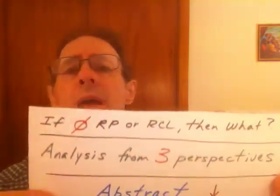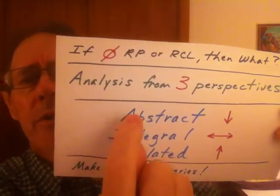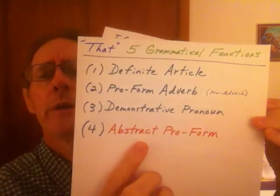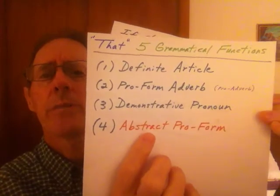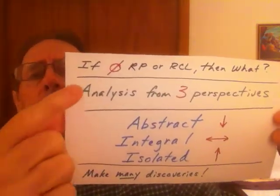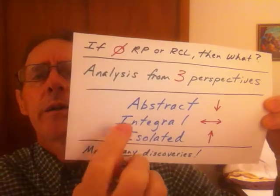I got that term because I analyzed the word "that" in its fourth grammatical function from three different perspectives. The first perspective was that of abstract — the word "that" as in abstract — and I ended up getting the term "abstract proform." That's just the first of three terms that you could use for the fourth grammatical function. Now we want to keep the analysis going and look at the word "that" on the integral level.